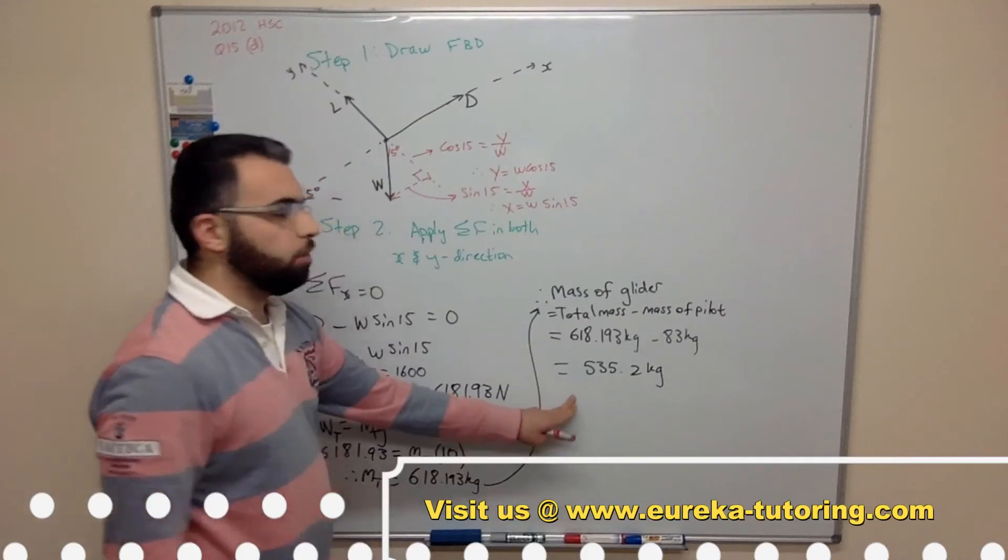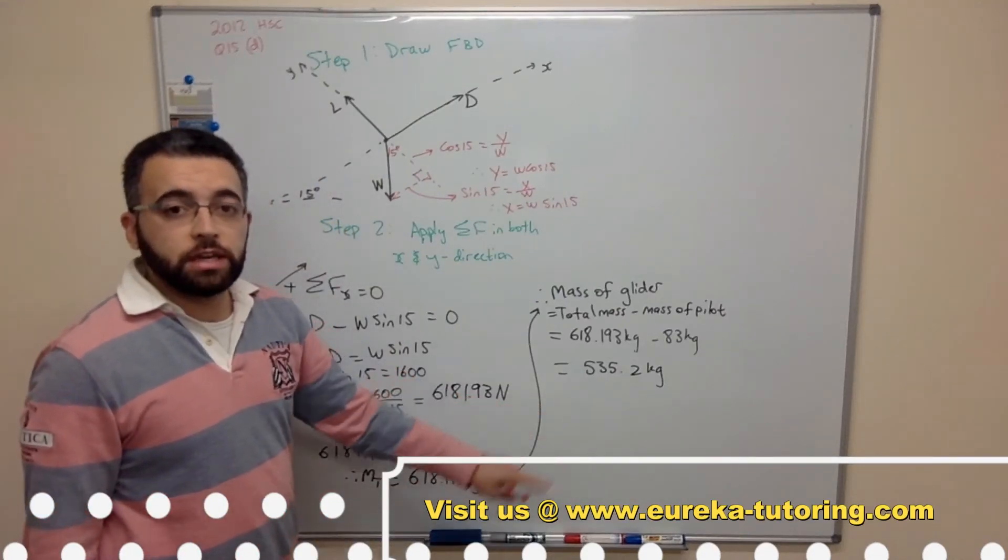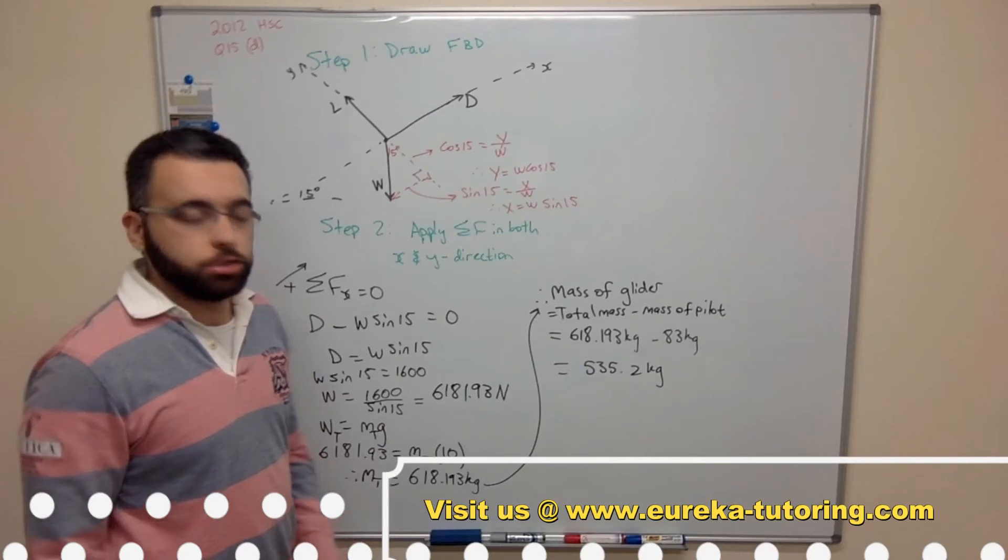So this is the mass of the glider. So that's the first half of the question. Now the second half is to find the lift to drag ratio.